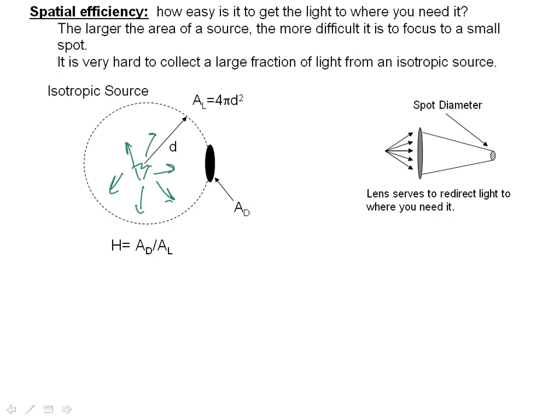The spatial efficiency, as we've covered before in class, is simply the area given by the black circle here that we call ad, which is the area that you want to get the light to, divided by the total area that's hit by the light, which is just the surface area of the sphere with radius d. That's just 4πd². So the transfer function, the amount of light that goes from your isotropic source, would be ad divided by al.